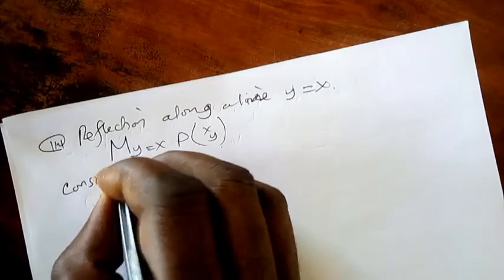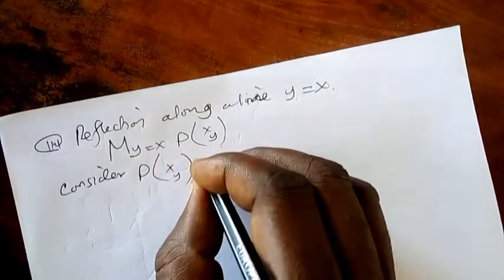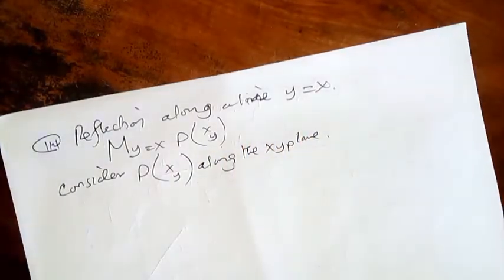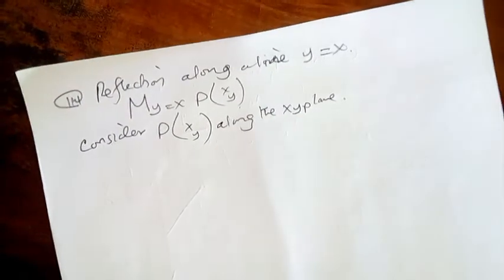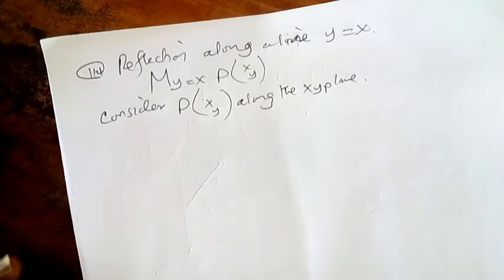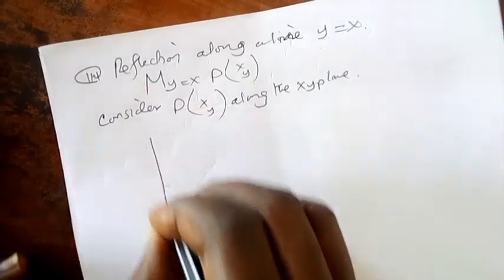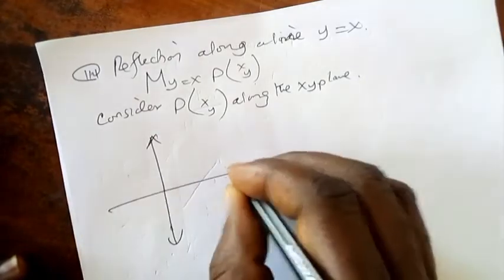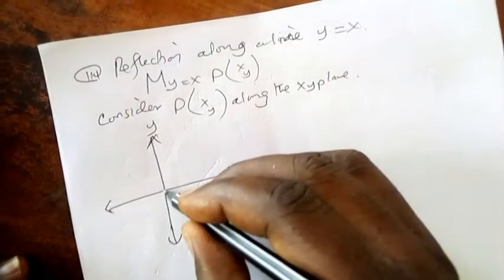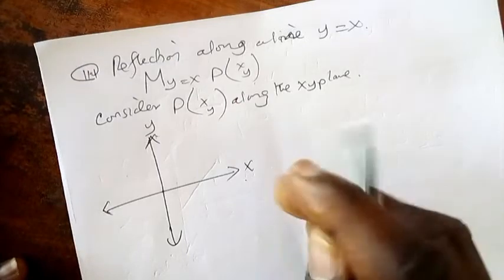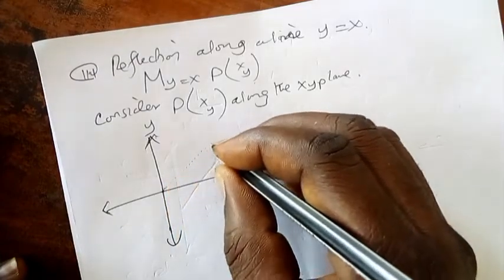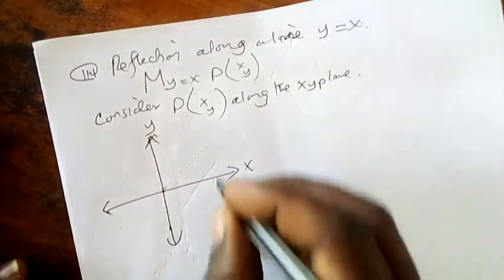Consider this is the x and y plane. This is y, this is x. When y = x, as y increases, x must also increase. If x decreases, y also decreases. So the line will be here in the middle. Assume we have a point here.